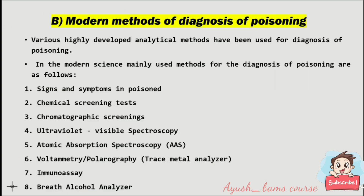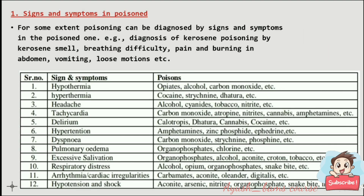Modern methods of diagnosis of poisoning: various highly developed analytical methods are used in modern science. The main methods are: signs and symptoms, chemical screening tests, chromatographic screenings, ultraviolet-visible spectroscopy, atomic absorption spectroscopy, polarography, immunoassay, and breath alcohol analyzer. For some extent, poisoning can be diagnosed by signs and symptoms alone — for example, diagnosis of kerosene poisoning by kerosene smell, breathing difficulty, pain, burning abdomen, vomiting, and loose motions. Please refer to the table for signs and symptoms and corresponding poisons.